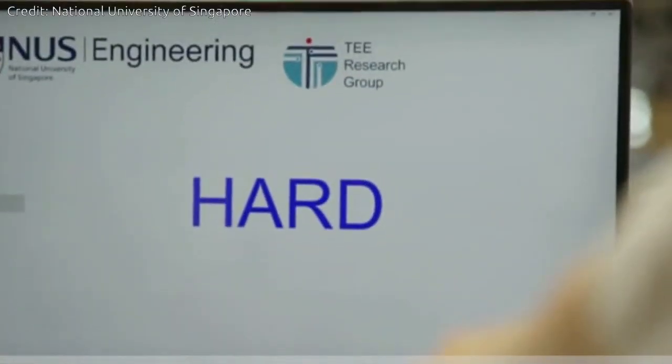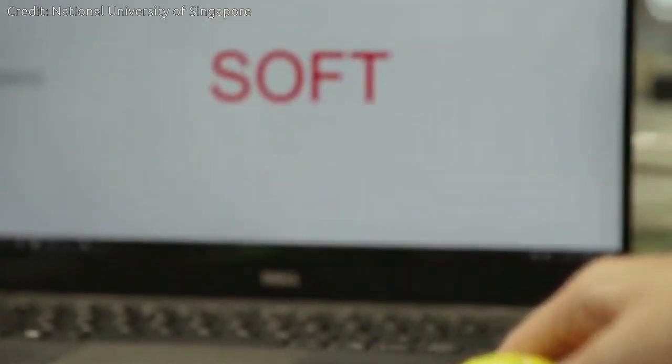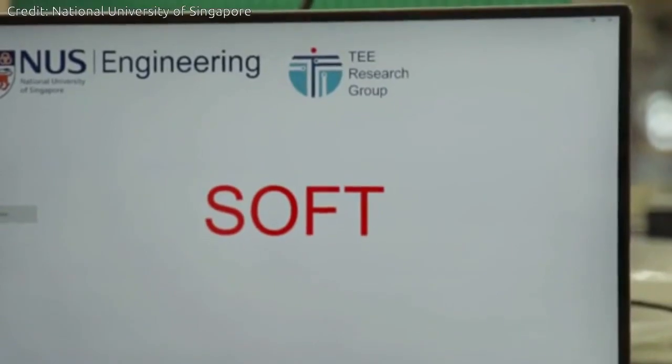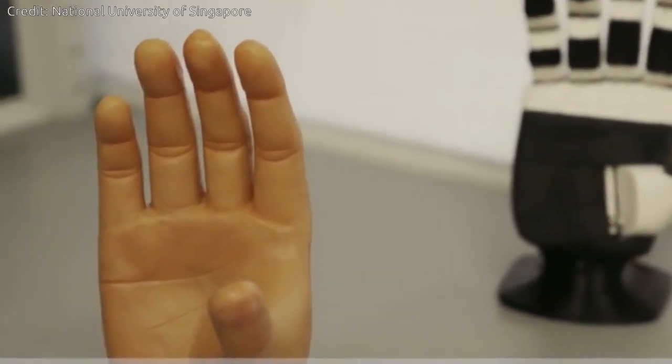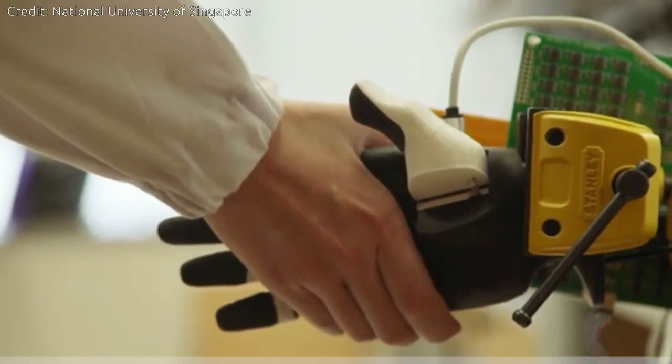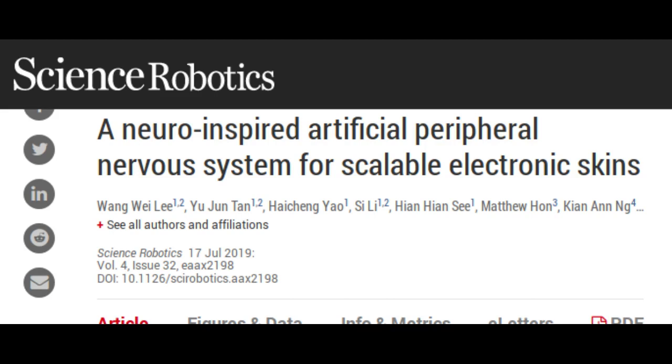Drawing inspiration from the human sensory nervous system, the NUS team spent a year and a half developing a sensor system that could potentially perform better. While the ACES electronic nervous system detects signals like the human sensory nervous system,